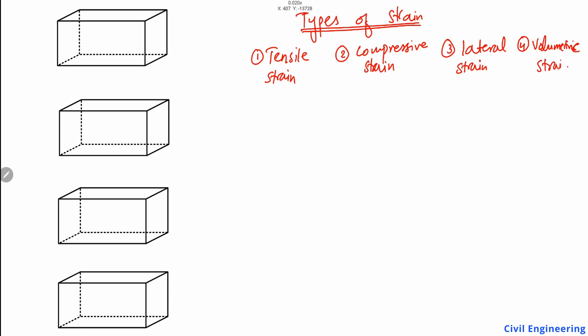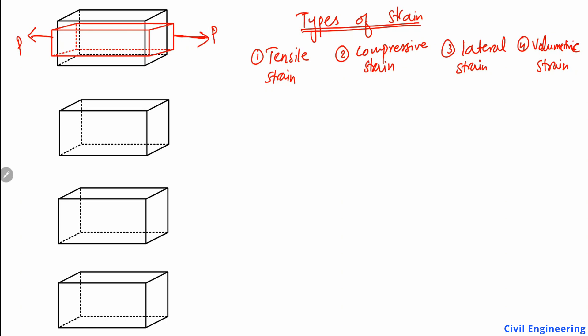Starting with the first one, which is tensile strain. Tensile strain is due to the increase in length of an object. For example, if I consider an object and apply a load P acting on it in this direction, because of this load there will be an increase in the length of the object. This change in length due to the increase will be known as the tensile strain.